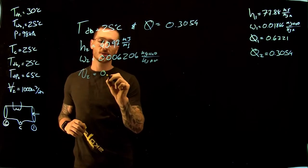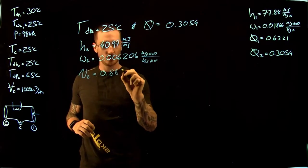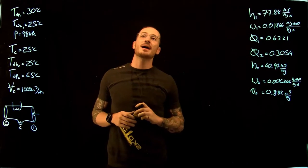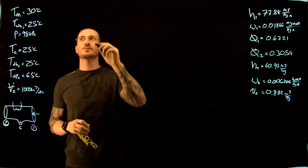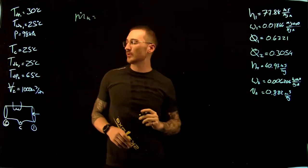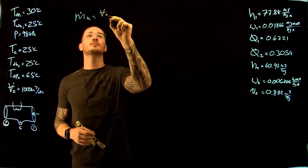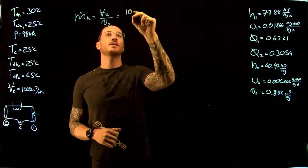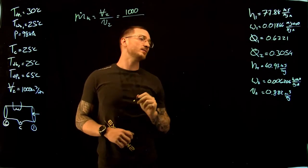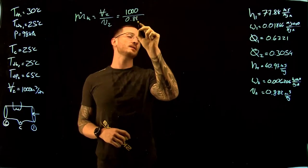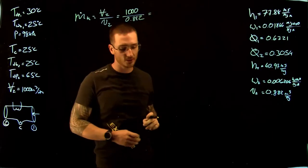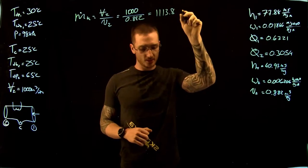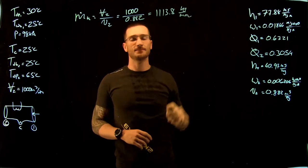Since our mass flow rate of dry air is constant, we solve for it as the volumetric flow rate at the exit divided by the specific volume at the exit. This gives us 1000 m³/min divided by 0.882 m³/kg, which gives us a mass flow rate of 1113.8 kg/min.